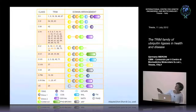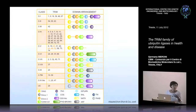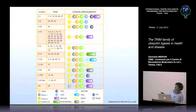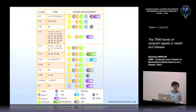The ring domain is followed by one or two B-boxes and the coiled-coil. The B-boxes can be present in a tandem array, always with B-box 1 preceding B-box 2. If only one B-box is present, it is always a type 2 B-box. There are only a few members which have lost the ring domain during evolution. The B-box domains are the characteristic feature of this family and are only present within this arrangement in the Trim family.